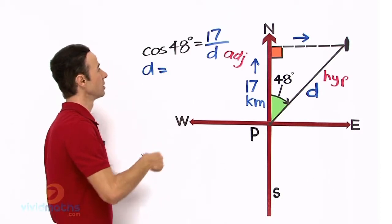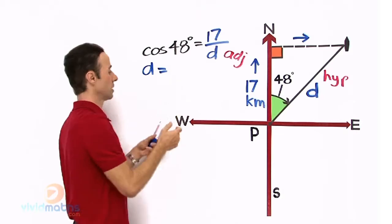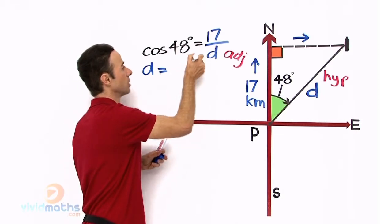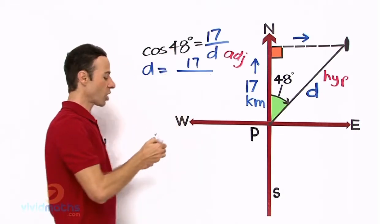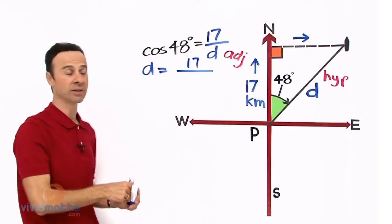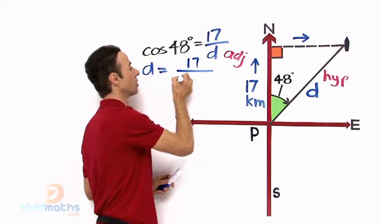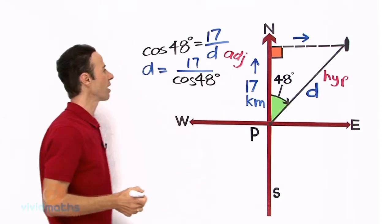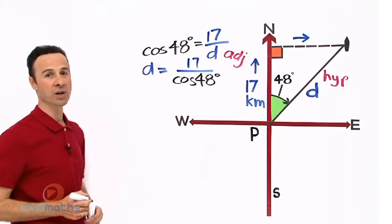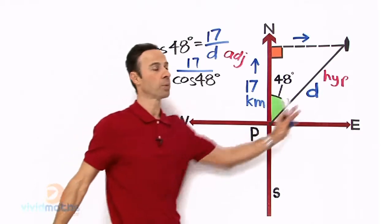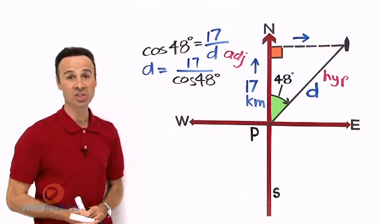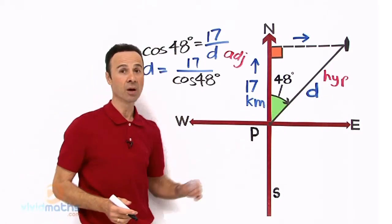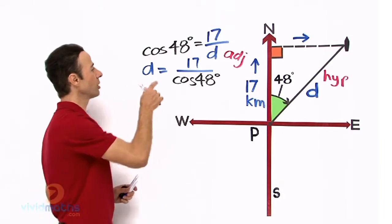And what we can say is now the D over there: D equals, we keep the 17, yep, D equals 17 all over, and bring the cos 48 to the denominator underneath. Let me write that underneath. Cos 48 degrees. There we have a very effective equation. We are looking for D, the hypotenuse. Let's find out the distance that the ship is from P, the port.